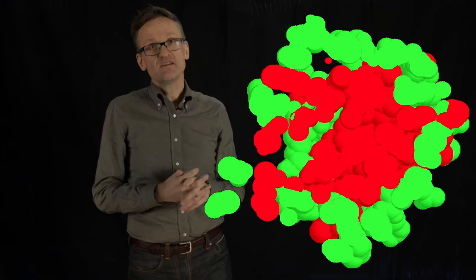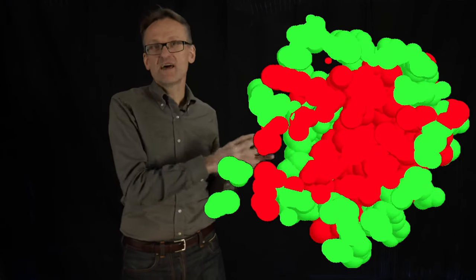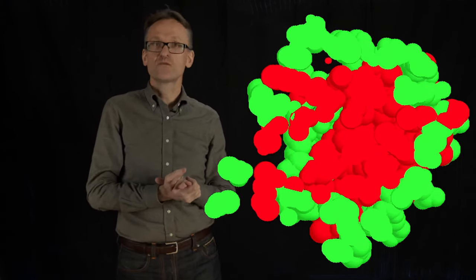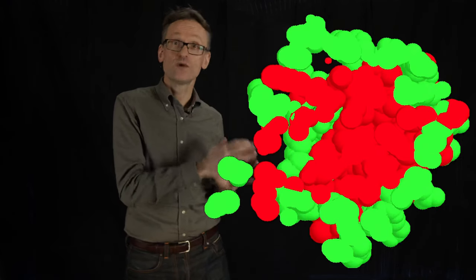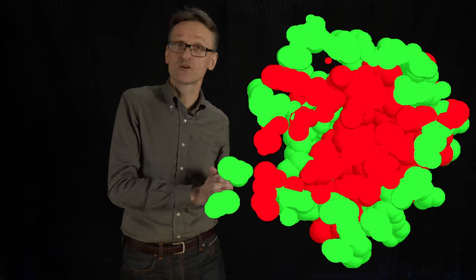Molten globule is more of an intermediate state that's not completely random inside, so there is more protein structure. But for now consider this the first key state on the way towards protein folding and the molten globule.